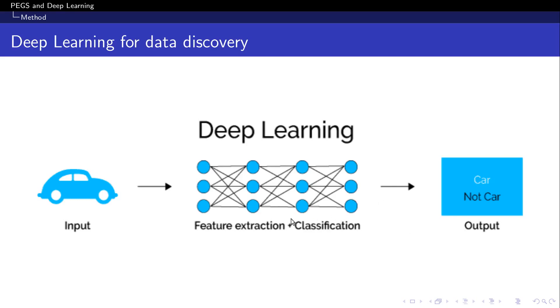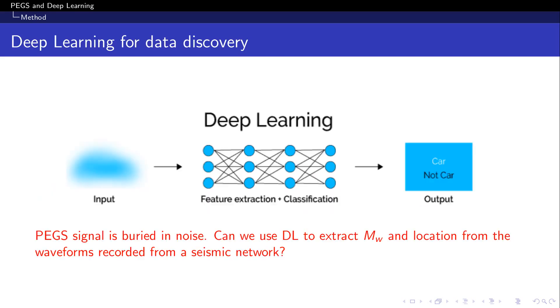In our case, the input image will be represented by noisy PEGS waveforms and the output will be real values corresponding to magnitude and location. So we're going to be in a situation like that in which our input is going to be noisy waveforms and we want to, rather than performing a classification, we want to predict magnitude and location using the information contained in the whole seismic network.